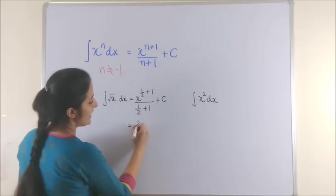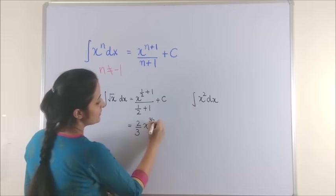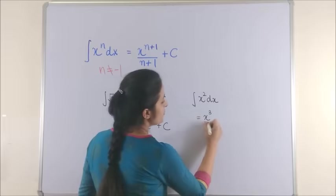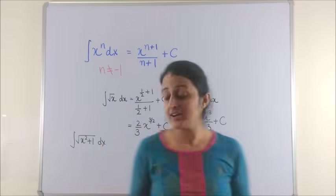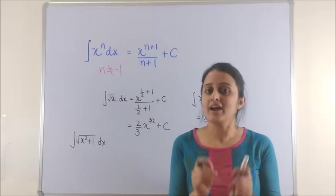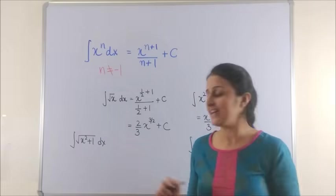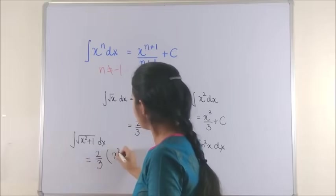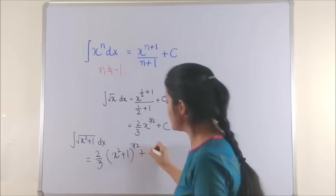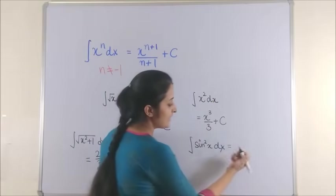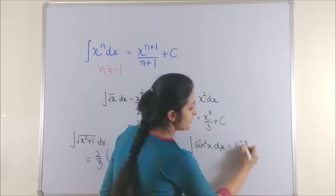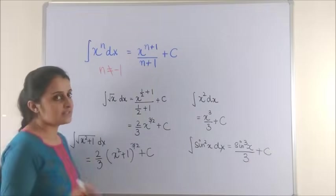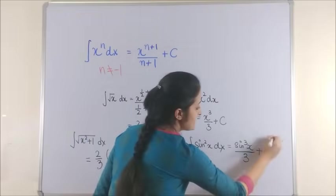And give your answer as 2 by 3 into x raised to power 3 by 2 plus c. Similarly, this one gives us the answer x cubed by 3 plus c. However, look at this example. I have actually seen students making this mistake as they write the answer for this as 2 by 3 into x square plus 1 raised to power 3 by 2 plus c. Here, integral of sin square x dx would become sin cube x upon 3 plus c. This is a huge blunder. You cannot get these answers.